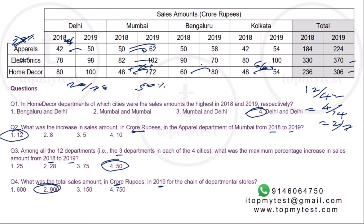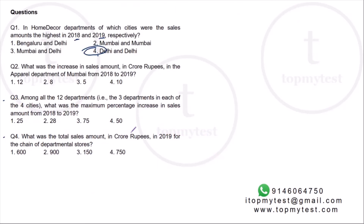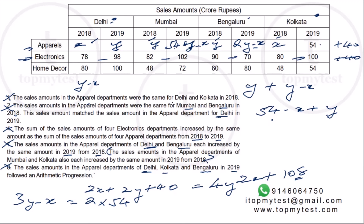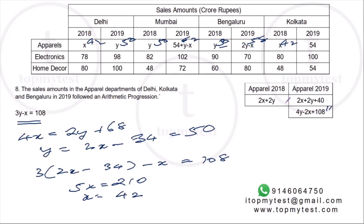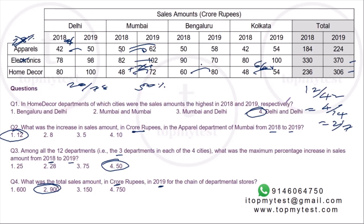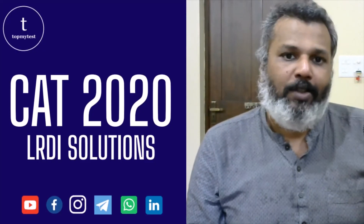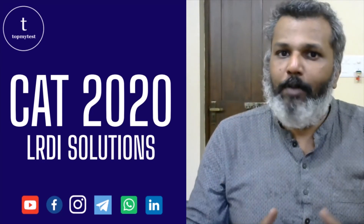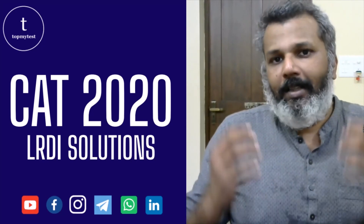This was a calculation-intensive question — not difficult, but not easy either. You need patience, especially after solving the first question quickly. To solve questions 2, 3, and 4, you need to resolve the two equations, which takes about three to four minutes. In an exam situation, this set will take about 9 to 10 minutes. You can use the calculator. It's a moderate-level difficulty question.